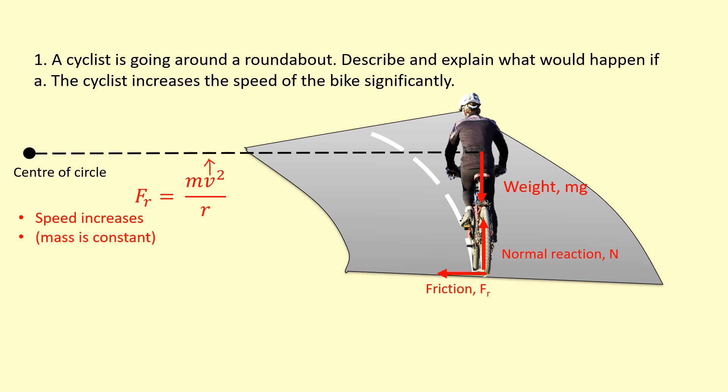But there's a limit to how big friction can be. We're going to assume mass constant, which is a reasonable assumption. If we increase the speed, the centripetal force, which is provided by the friction, must increase. However, there's a limit to how big the friction can be.